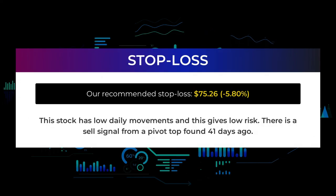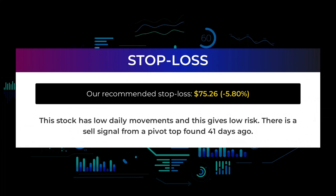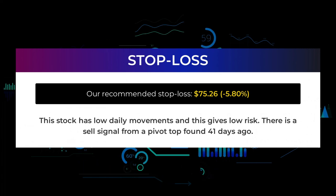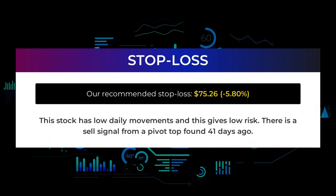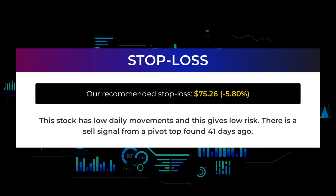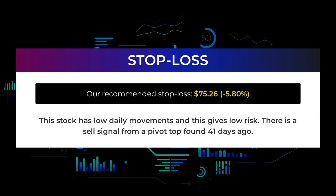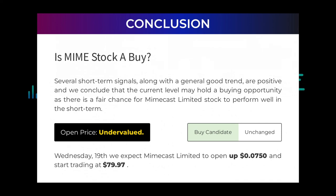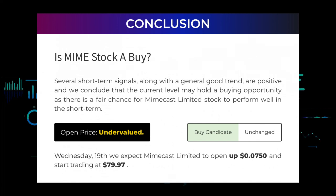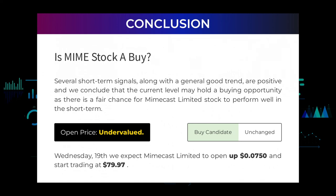Our recommended stop loss is $75.26, which is minus 5.80%. This stock has low daily movements, giving low risk. There is a sell signal from a pivot top found 41 days ago. Is Mimecast Limited stock a buy? Several short-term signals, along with a generally good trend, are positive. We conclude that the current level may hold a buying opportunity as there is a fair chance for Mimecast Limited to perform well in the short term. After analyzing the volatility and movements for the last trading day, our systems find that the current price is undervalued.